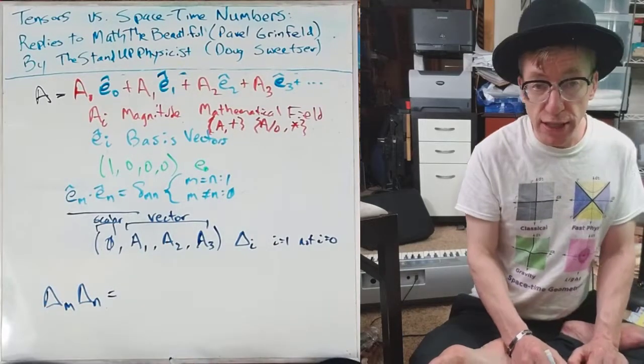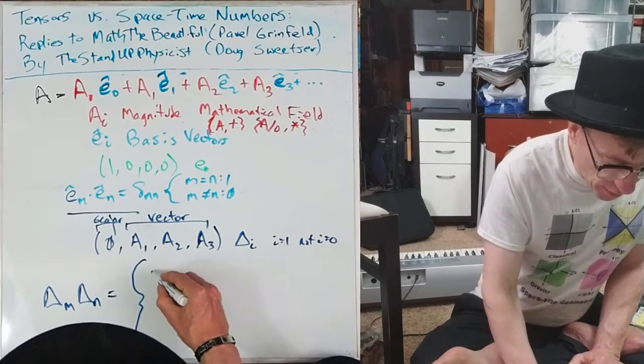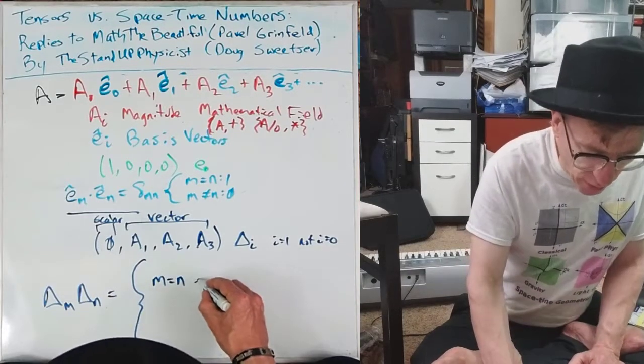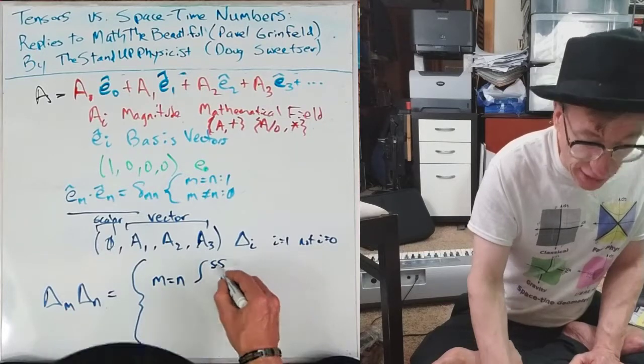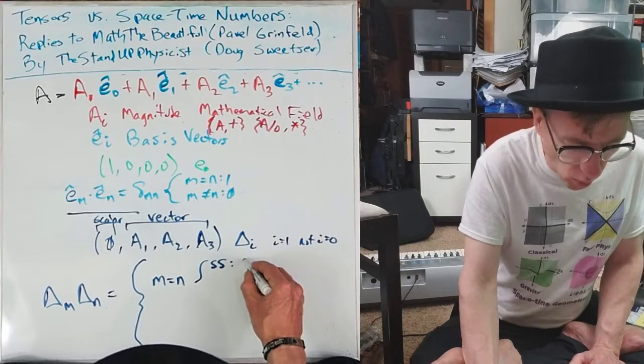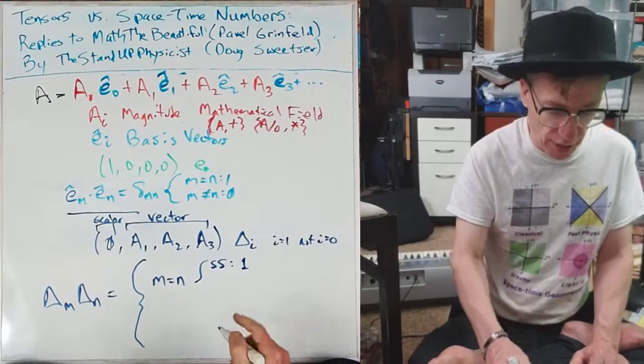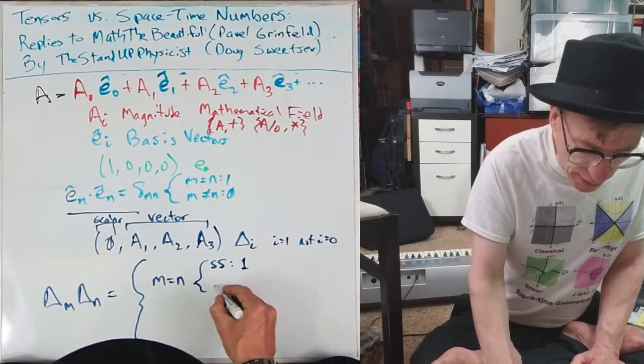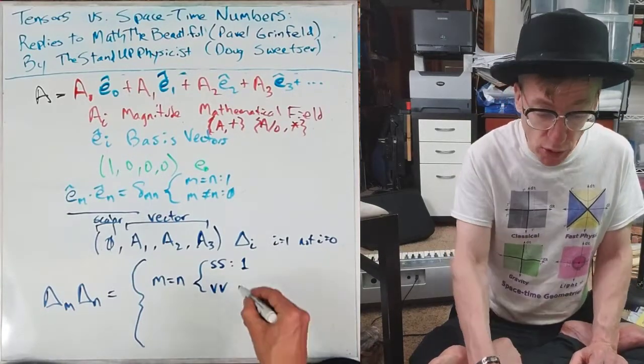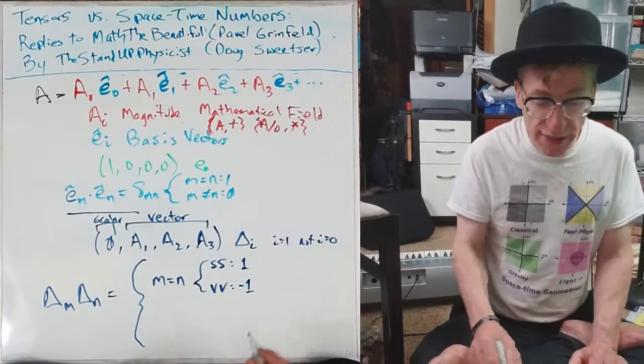This splits into four cases. The first two come from where M equals N. Do we have a scalar and a scalar? Well, if you do, then you're going to get 1. That's just like that case. Rock the house. But what happens if you do a vector times a vector? You actually end up with a minus 1. So this isn't the same anymore.